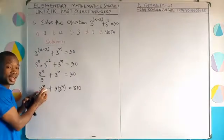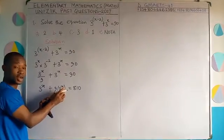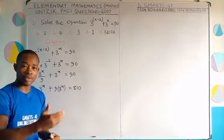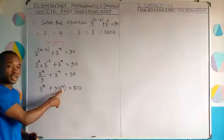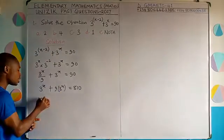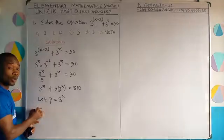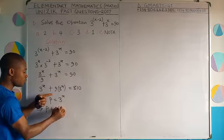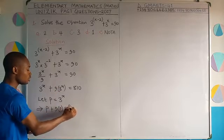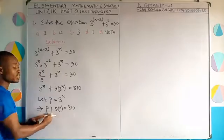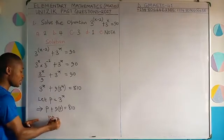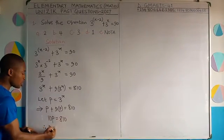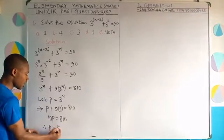We have 3^x in both terms but we don't know x, so we let p equal 3^x. This gives us p plus 9p equal to 810, so 10p equals 810. Dividing both sides by 10, p equals 81.